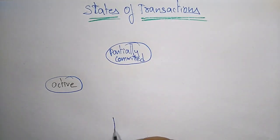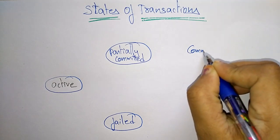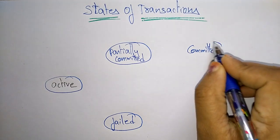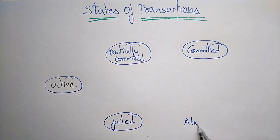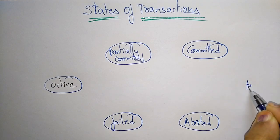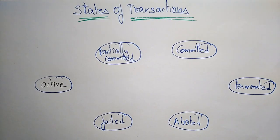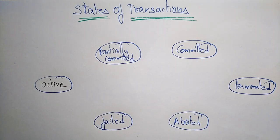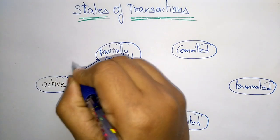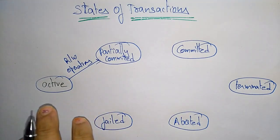There is also a failed state, where your transaction may be in the failed state, a committed state, an aborted state, and a terminated state. So altogether there are six states. Whatever transaction you take, that transaction may be in active state, partially committed, failed, committed, aborted, or terminated state.